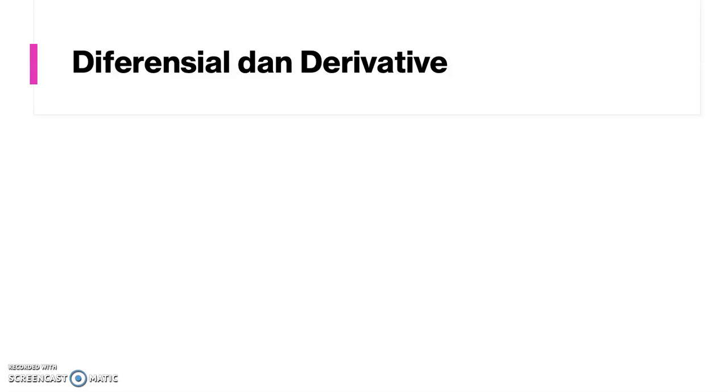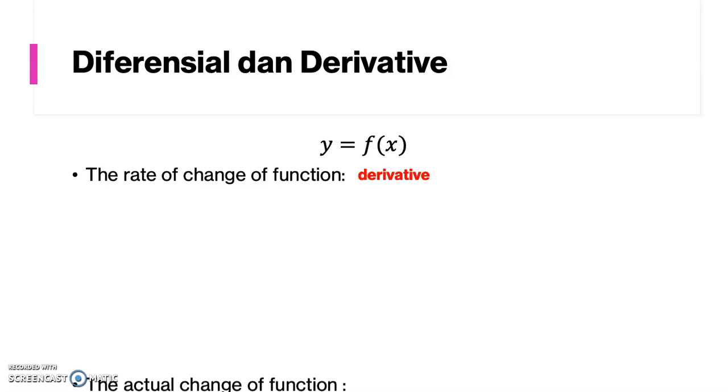I will give a short explanation about derivative and differential here. So, if we have the function y as a function of x, then the rate of change of a function is called a derivative, while the actual change of a function is the differential.